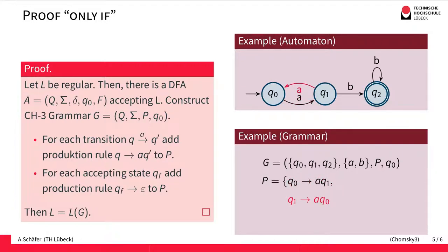Then we take the next transition from Q1 to Q0 with an A and add a corresponding production. There is also an alternative: from Q1 we can read B and go to Q2, so we add an alternative production replacing Q1 by B followed by Q2. There is a loop at Q2 — a transition reading B and staying in Q2 — so we add a similar production rule. Finally, since Q2 is an accepting state, we also allow the production to end here by replacing Q2 by the empty word epsilon. Our grammar is now complete.